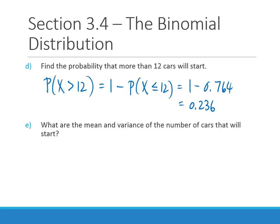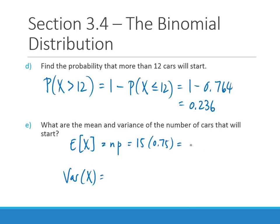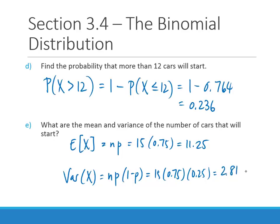Now let's apply our formulas. The mean and variance of the number of cars that start: the expected value of x is n times p, which is 15 times 0.75 equals 11.25 — we'd expect about 11 and a quarter cars to start. The variance is n times p times 1 minus p: 15 times 0.75 times 0.25 equals 2.8125.